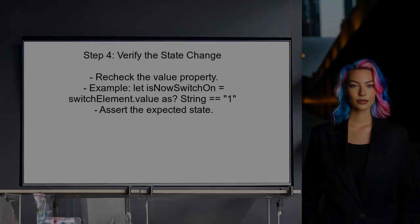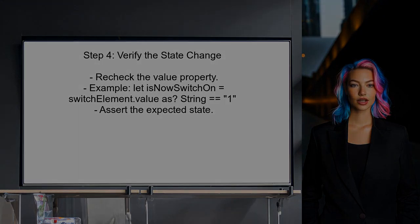Finally, the user should verify that the UISwitch has been toggled to the desired state. This can be done by rechecking the value property after the tap action.